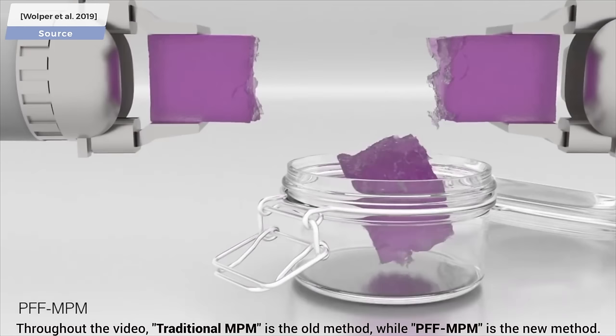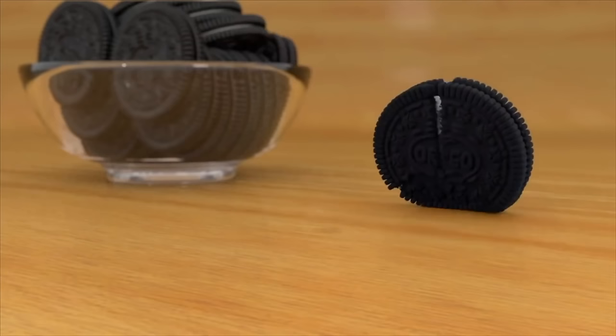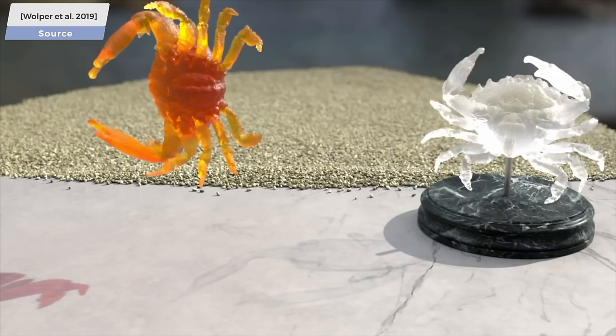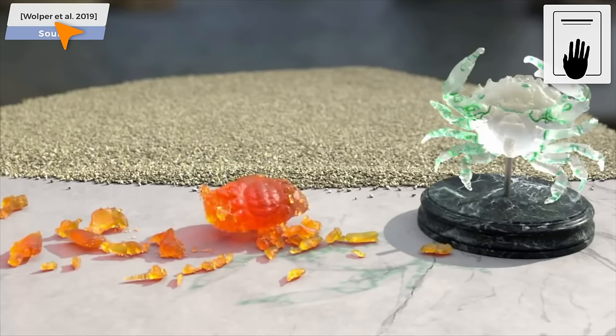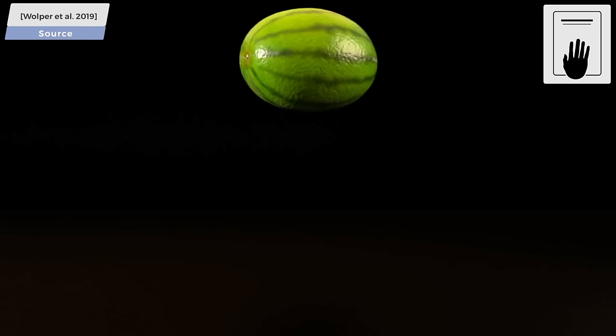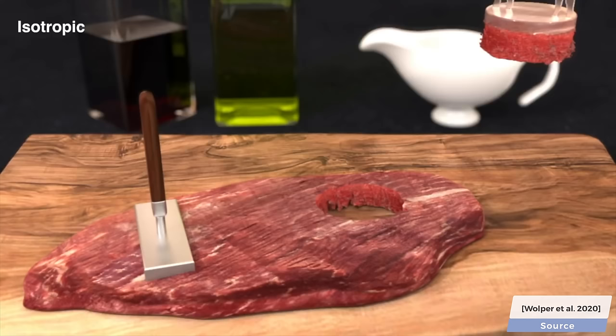Today, we are going to have a two-minute paper's moment of truth, because this is a follow-up work from Joshua Wolper, the first author of the previous bread paper, and you can immediately start holding on to your papers, because this work is one of the finest I have seen as of late. With this, we can enrich our simulations with anisotropic damage and elasticity.